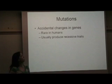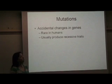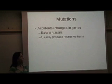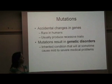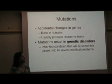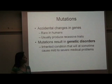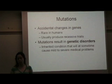These are accidental changes in the structure of the DNA. They're pretty rare in humans, and usually when they occur they produce a recessive trait, so it's not super common within the phenotype of the population. Mutations can result in what is known as genetic disorders, and these are inherited conditions that will at some point in that individual's life cause mild to severe medical problems.